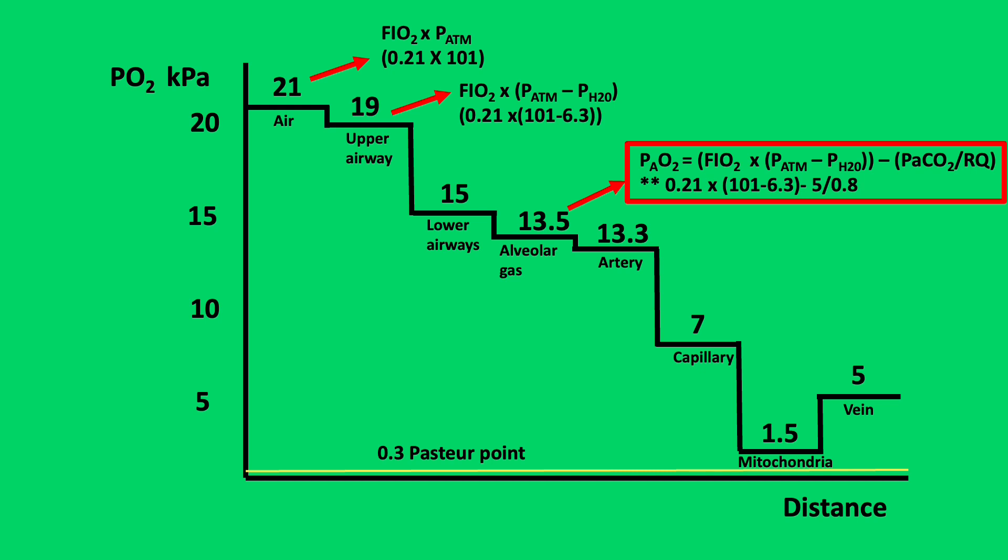Alveolar gas is a balance between the supply of gas from the airways and the uptake of gas to the surrounding vasculature.